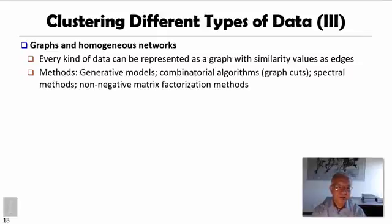Graphs and homogeneous networks are another kind of data. In homogeneous networks, nodes and edges are all of one type. Any kind of data can be modeled as a graph, with nodes representing different attributes or entries and edges representing similarity values. Typical methods for graph clustering include generative models, combinatorial algorithms like graph cuts, spectral clustering methods, and non-negative matrix factorization methods.